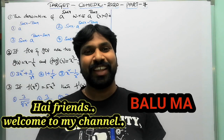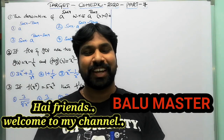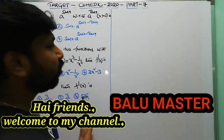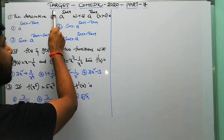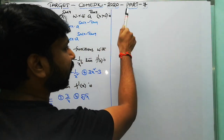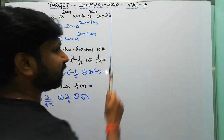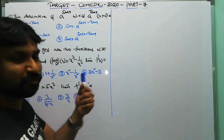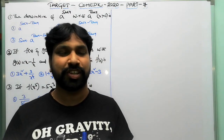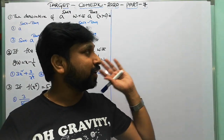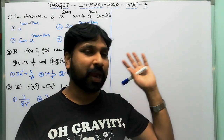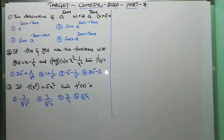Hi friends, good morning, welcome to my channel Balumaster. Today I'm going to discuss Target Comet Gate 2020 Part 7. This is a sequel of Part 6 — in Part 6 I discussed differentiation, and Part 7 is a continuation of that.